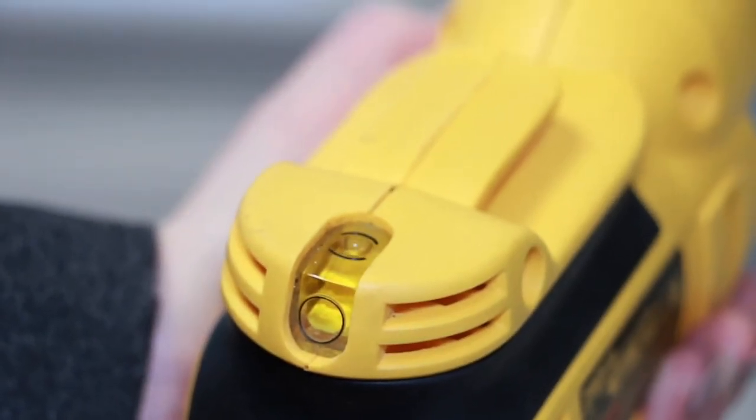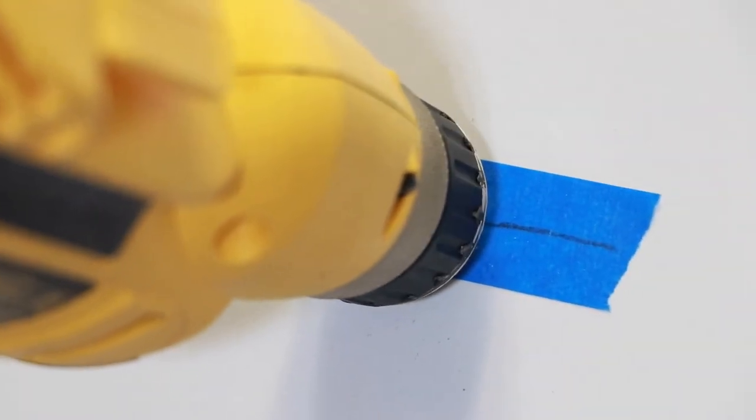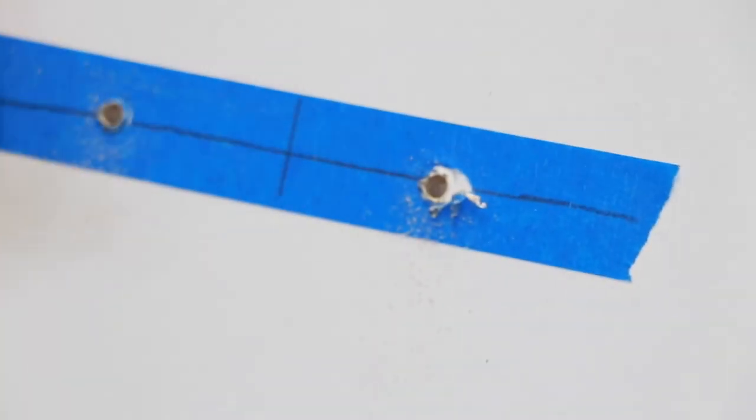Make sure you hold the drill level as you drill a hole through the drawer front. Drill slowly so you don't splinter the door as the bit pushes through the back side.